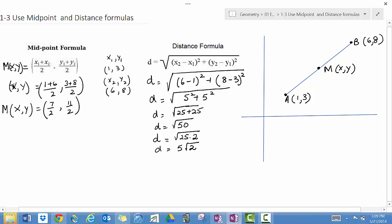If you were given just one endpoint and the midpoint, how would you find the second endpoint? I'm just going to sketch a segment here in this quadrant.